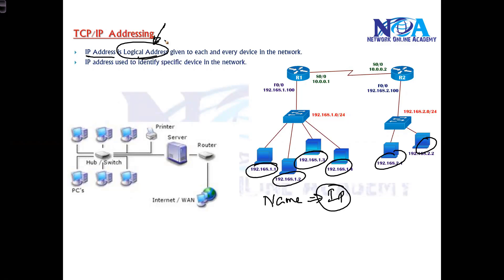It's a logical address which must be given to each device in the network. Without an IP address, you cannot communicate because there must be identification to send or receive traffic, and that's what the IP address does.